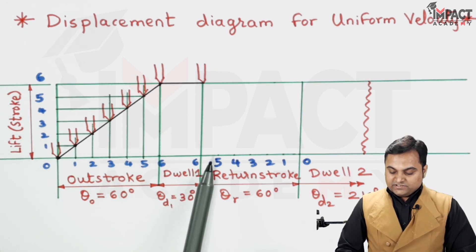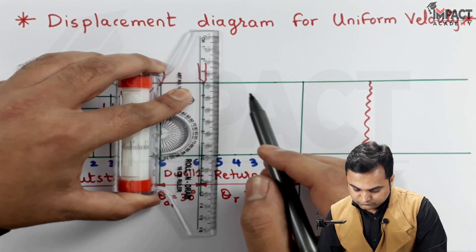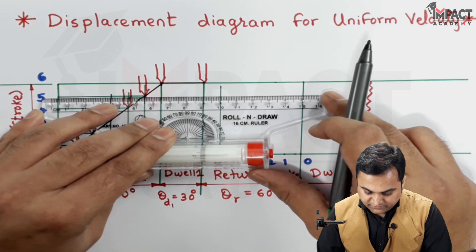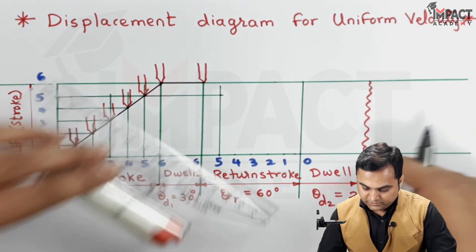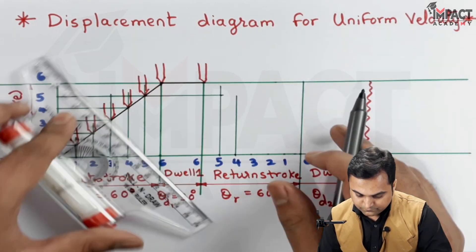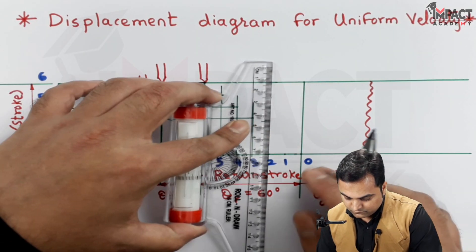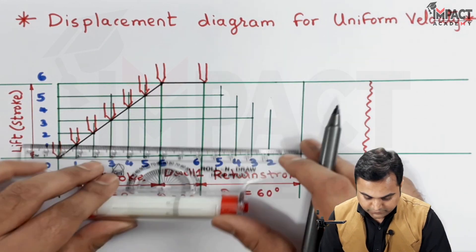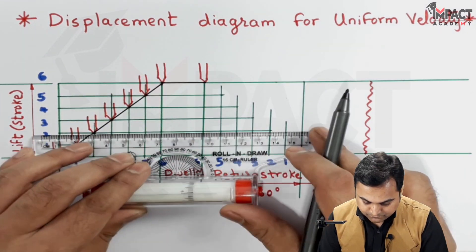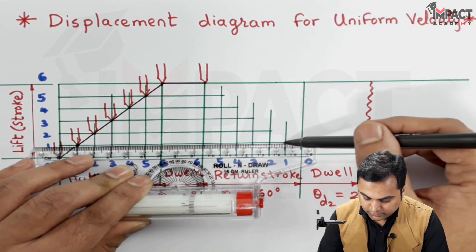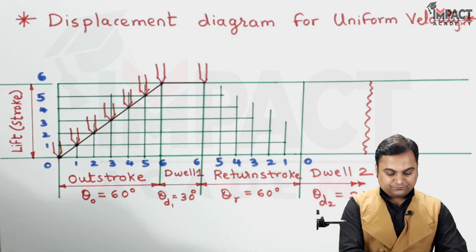So in a similar manner after 6, now 5 would be plotted with the help of light line and point number 5. I already have this over here for the outstroke, same point would be transferred. Similarly for 4, 2 and 2, point 1 and point 1, and finally it will reach up to 0. So I would be connecting all these points with the help of a line.